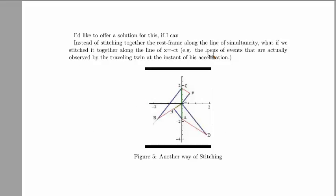Okay, I'd like to offer a solution for this if I can. Instead of stitching together the rest frame along the line of simultaneity, what if we stitched it together along the line of x equals negative ct, this line here? Not the line of simultaneity, but the locus of events that are actually observed by the traveling twin at the instant of his acceleration.